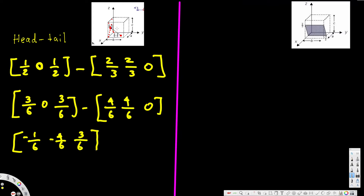The next step is to get rid of the fraction form — we always give the answer in full form. Multiplying everything by 6 gives us negative 1, negative 4, 3. When expressing Miller indices, we always put a bar over negative values, so the final answer is 1̄ 4̄ 3.